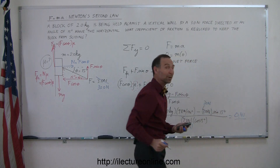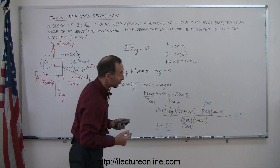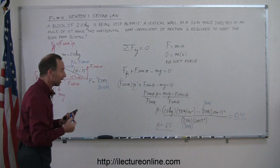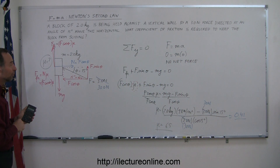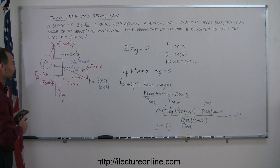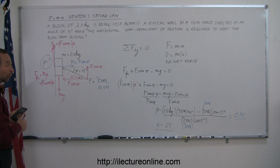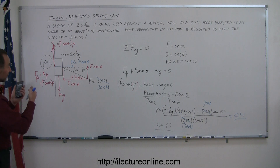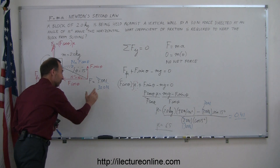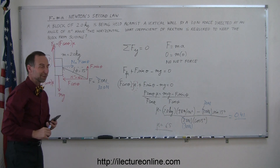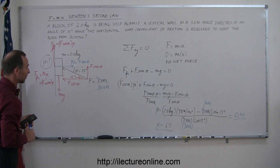If I apply a large enough force of 30 Newtons, mu would now be equal to 0.41, which is a quantity between 0 and 1 — a plausible answer. So if the coefficient of friction is 0.41 or greater, the block would not slide down, but I do need a force greater than 3 Newtons to make that happen.